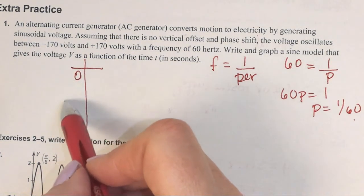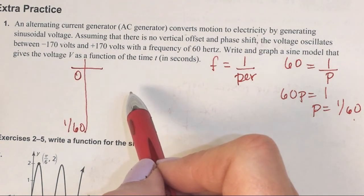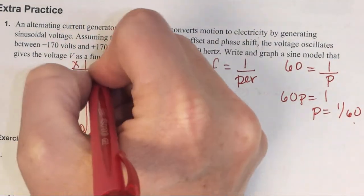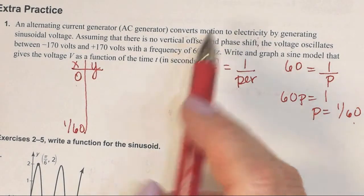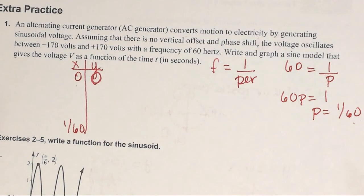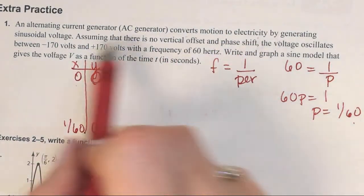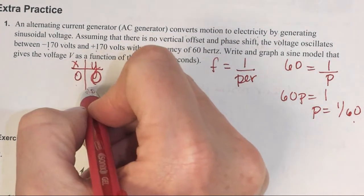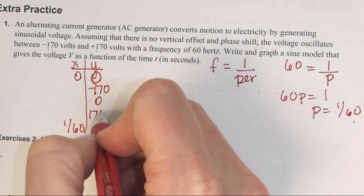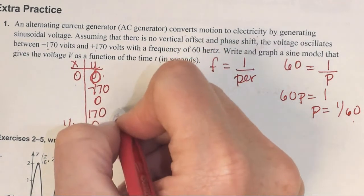If we start at 0, we end at 1/60. It's not necessary to find all the x's because we can find the B value without them. It says there's no vertical offset and no phase shift, so we're starting at 0 here and ending at 0. The voltage oscillates between -170 and +170. What kind of curve is it, sine or cosine? It's going to be sine.